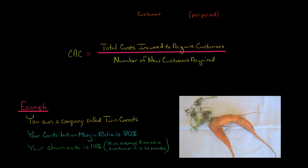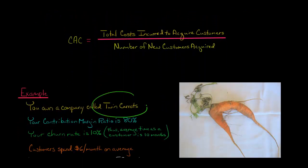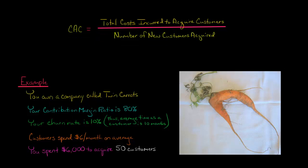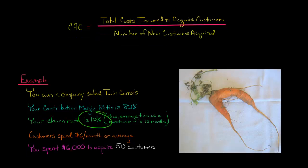Let's say that you own a company called Twin Carats. Your contribution margin ratio is 80% and your churn rate is 10%, meaning you lose 10% of your customers in any given month. We're going to work on a monthly basis. Every month 10% of your customers stop being a customer, which means the average length of time someone spends as a customer is 1 divided by the churn rate — so 1 divided by 0.1, which equals 10 months.